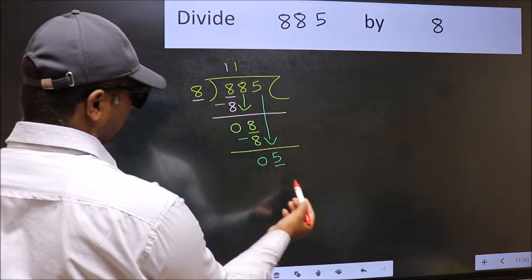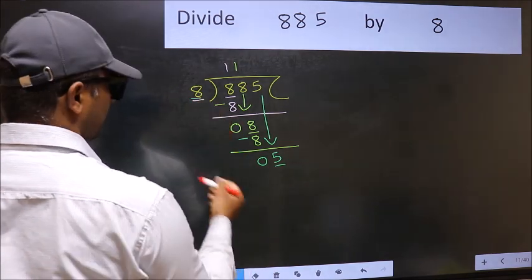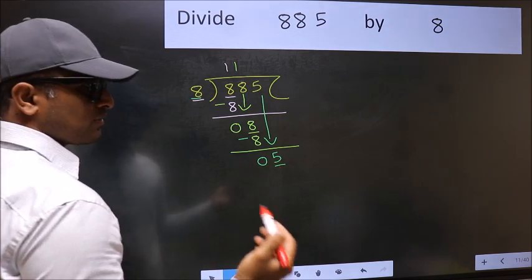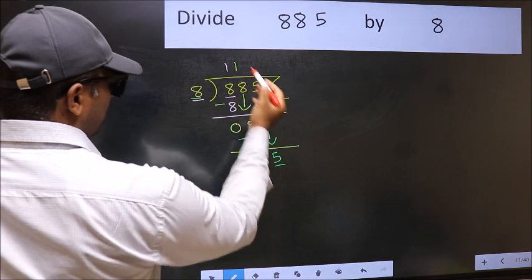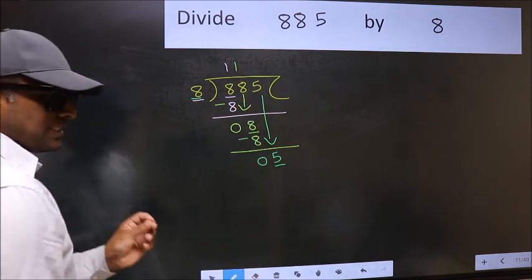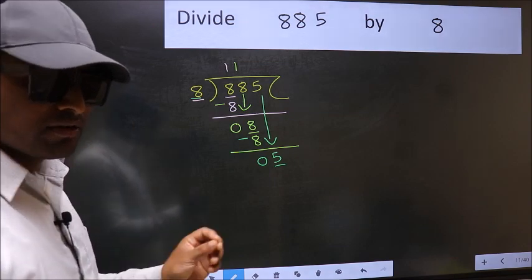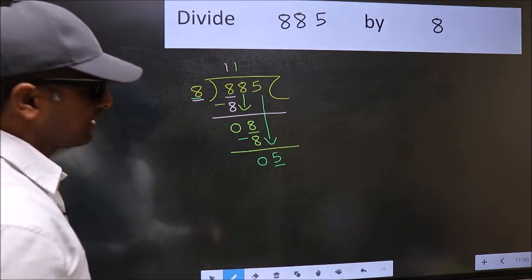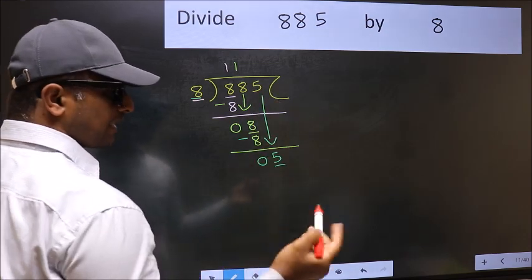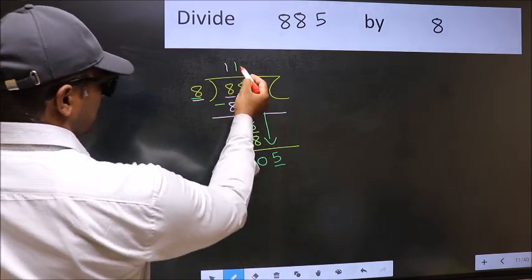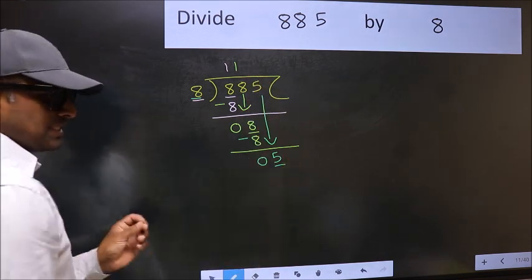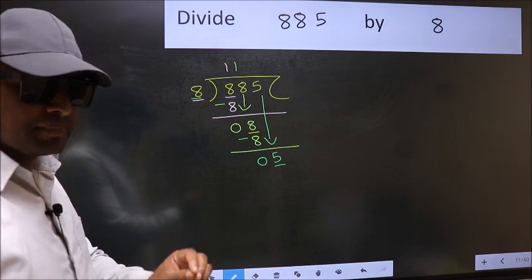Here we have 5 and here 8. 5 is smaller than 8. So what many do is they directly put dot and take 0, which is wrong. Why is it wrong? Because just now you brought this number down, and in the same step you want to put dot and take 0. Which is wrong.